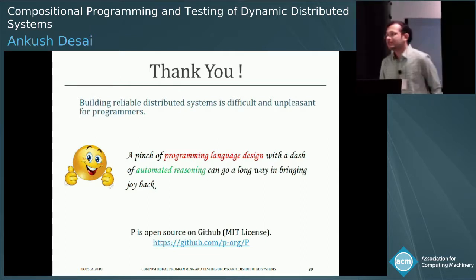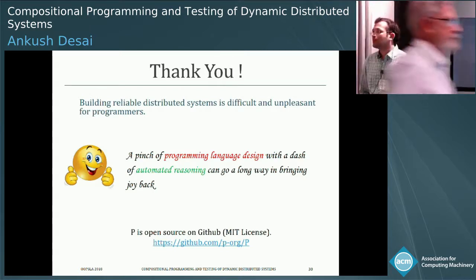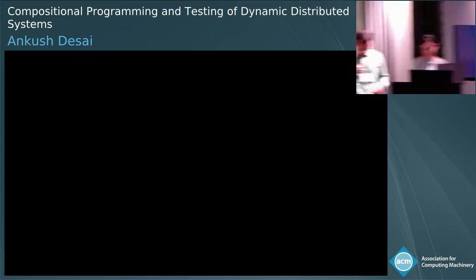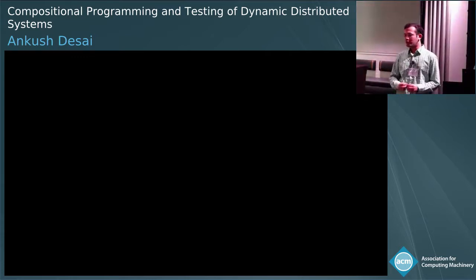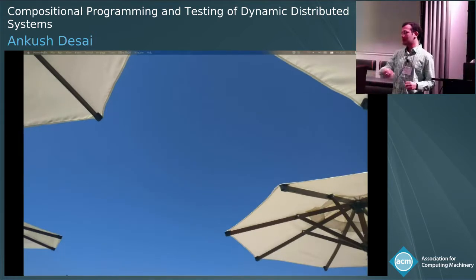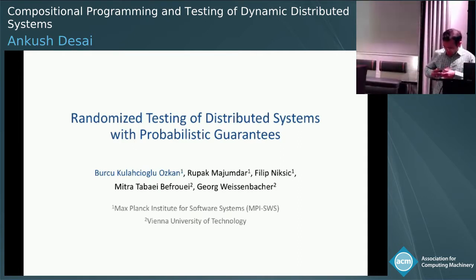Q&A: Another question raised whether message-passing systems require alternating refinement rather than simple trace inclusion, which is more complex. The response was that in this work, refinement is purely trace-containment based. The key was ensuring traces are detailed enough to capture dynamism — including actor creation and the identifiers sent across — making the matching straightforward. Trace containment was chosen specifically to remain compatible with the back-end enumeration-based testing engine.